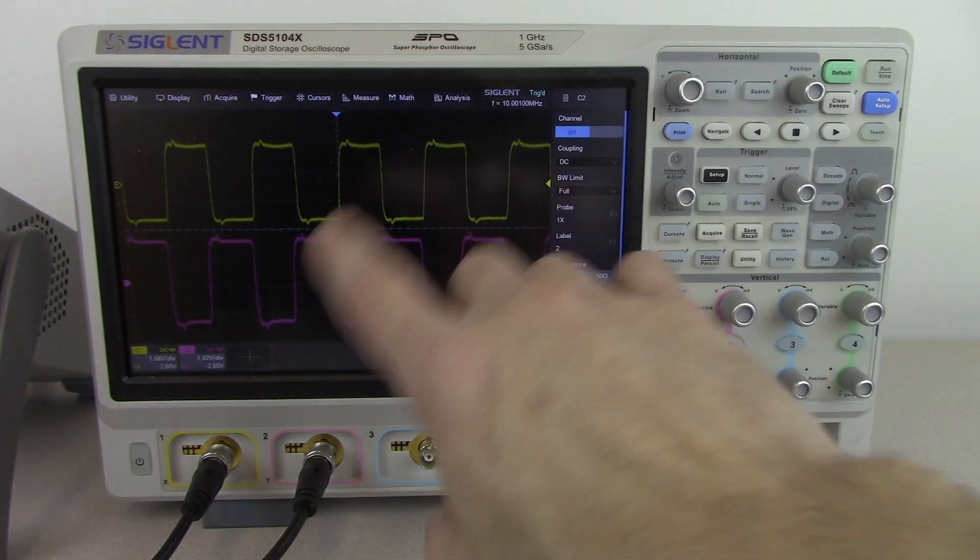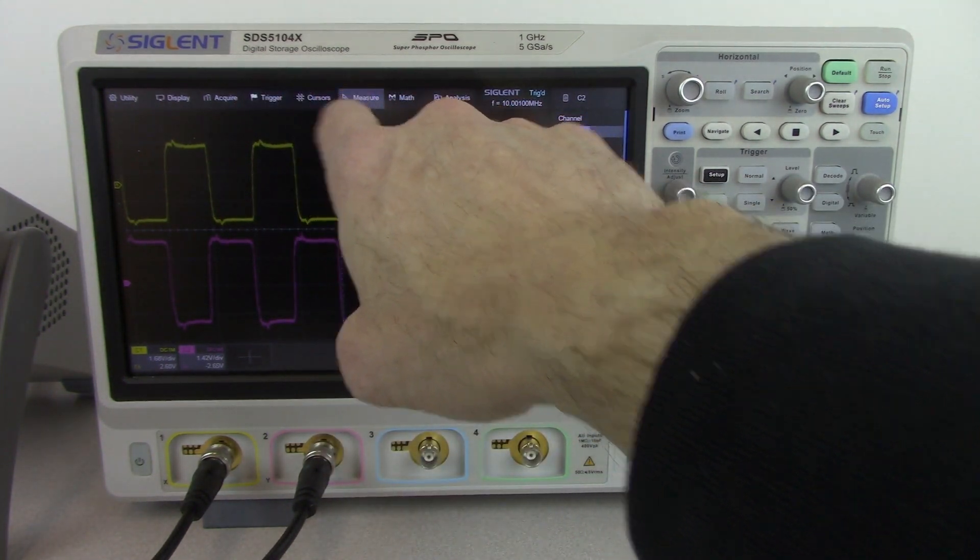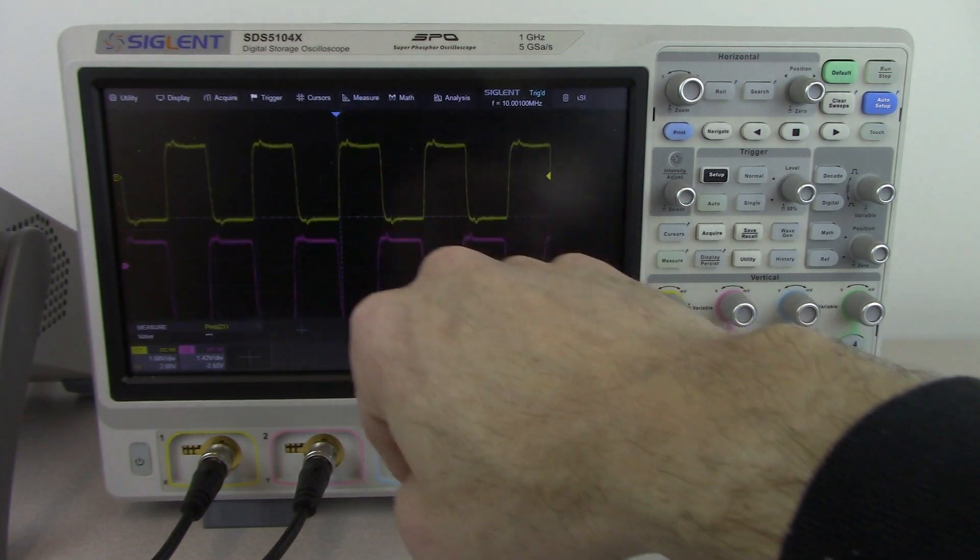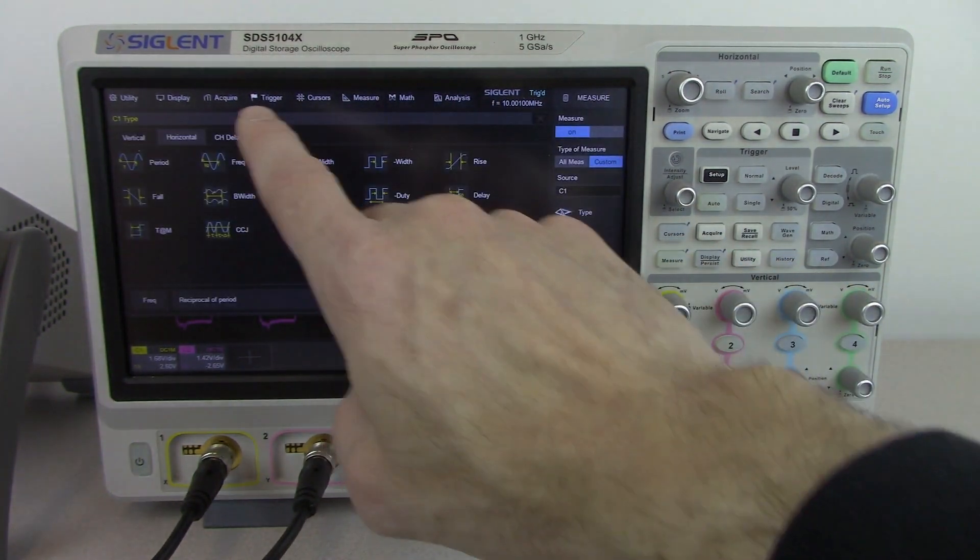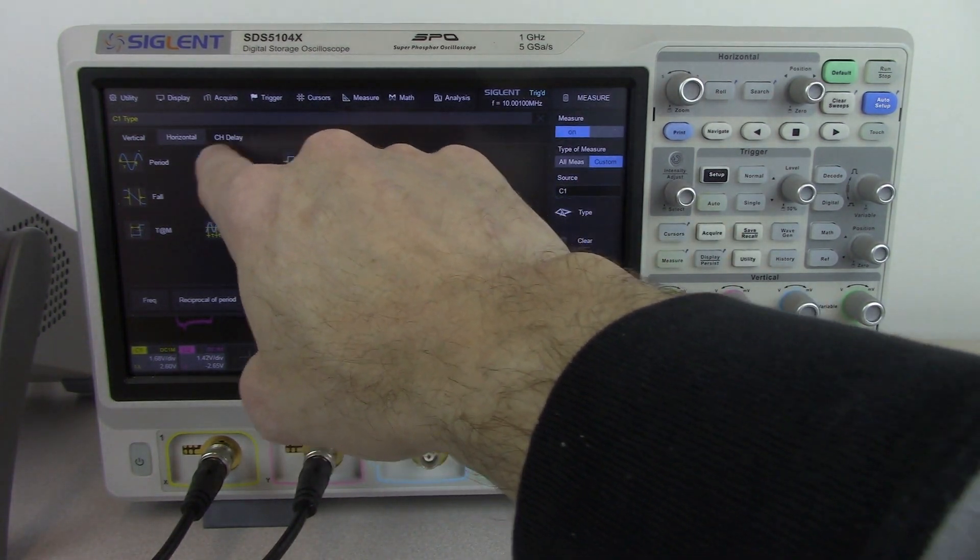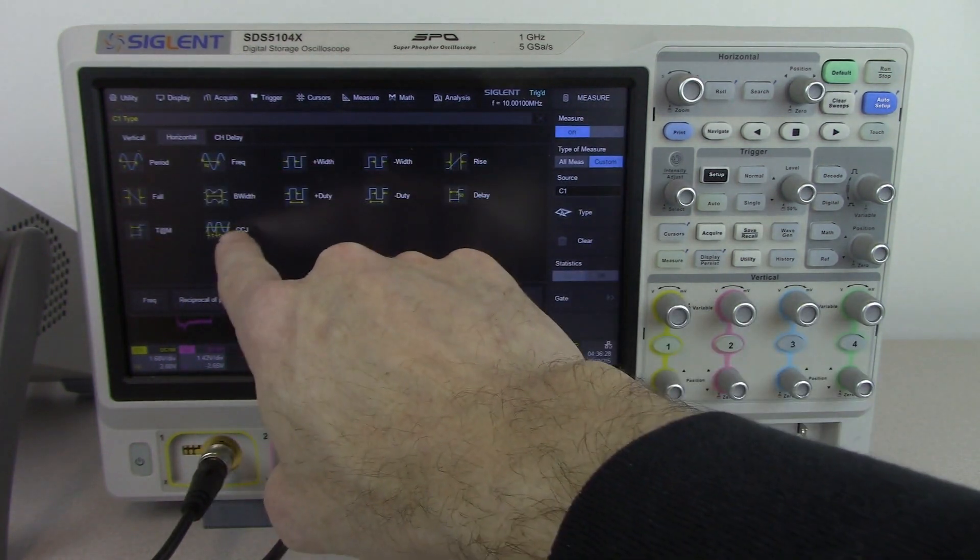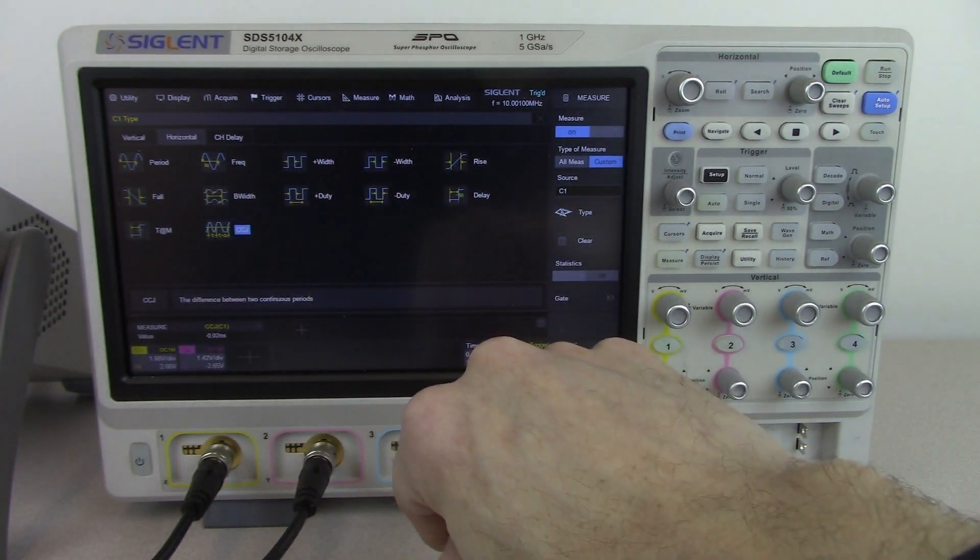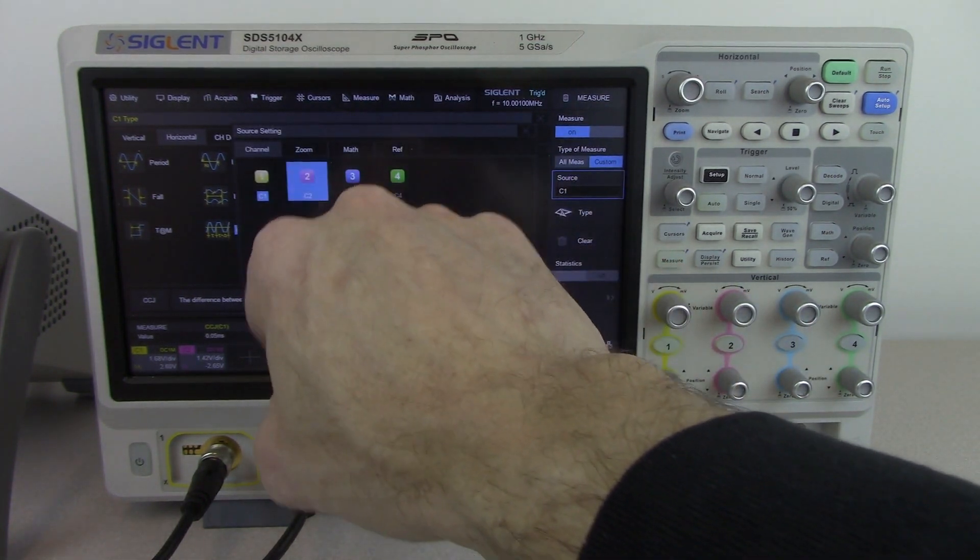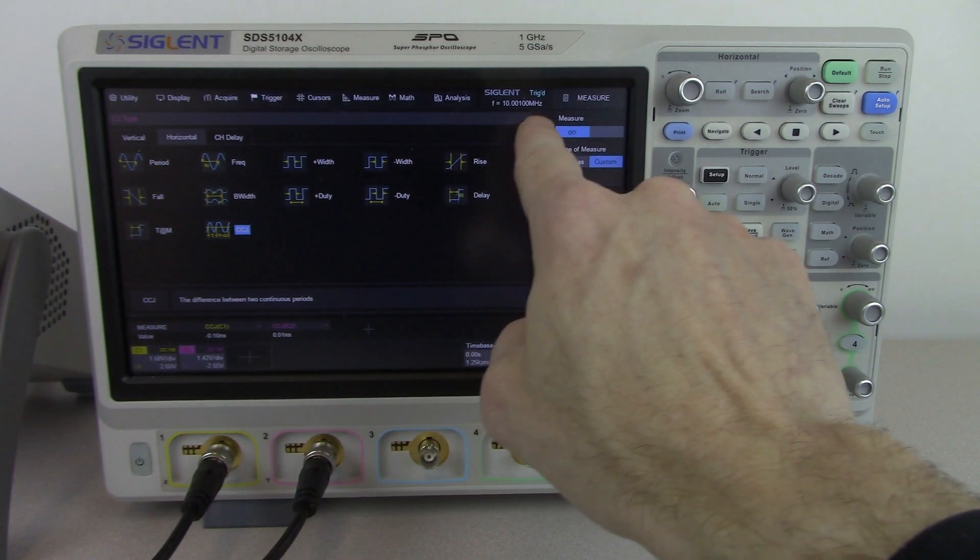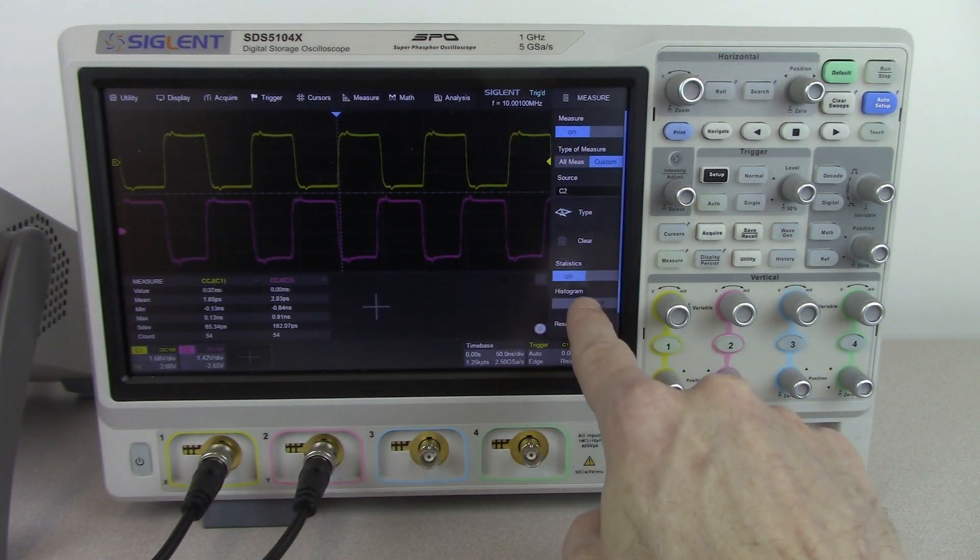Now I'd like to test what the cycle-to-cycle jitter is between these two channels. I can go to Measure, Custom, then Clear, and I'll set up Type. Now I'm on channel 1 and I'll set up the horizontal cycle-to-cycle jitter or CCJ. Now I want to do the same for channel 2, selecting source channel 2, cycle-to-cycle jitter. Now I'd like to take a look at the statistics for these as well as the histogram.